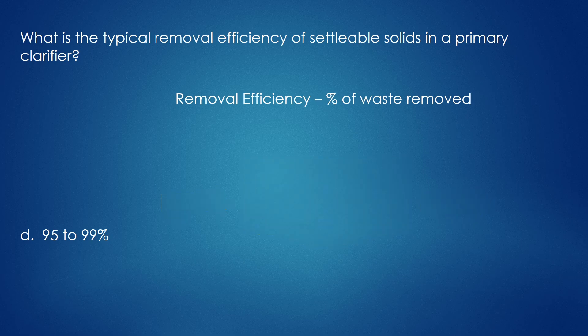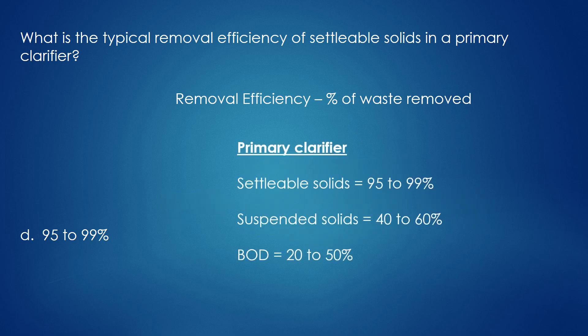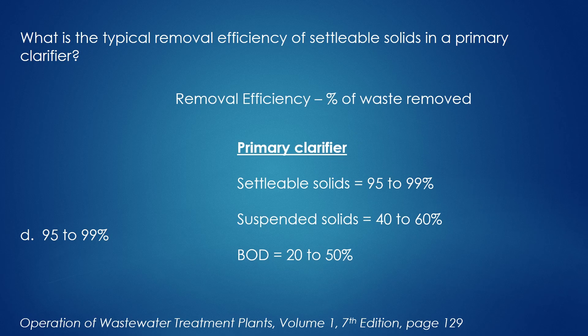Other common removal efficiencies you should know for the primary clarifier are suspended solids at 40-60%, and BOD at 20-50%. To learn more, go to the textbook Operation of Wastewater Treatment Plants Volume 1, page 129, where they go over it in more detail.